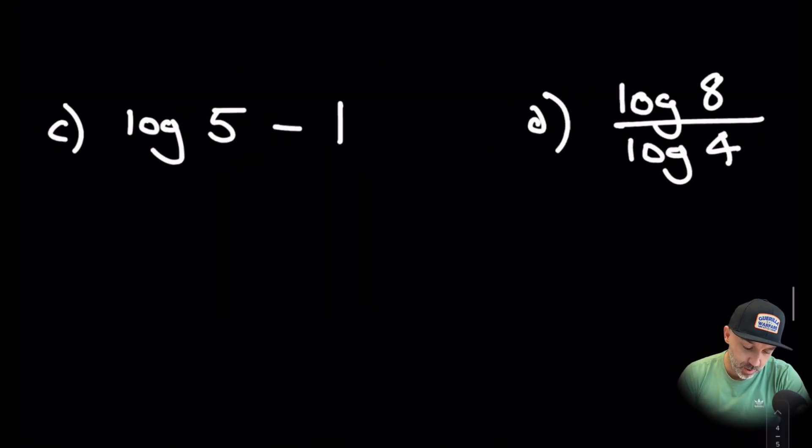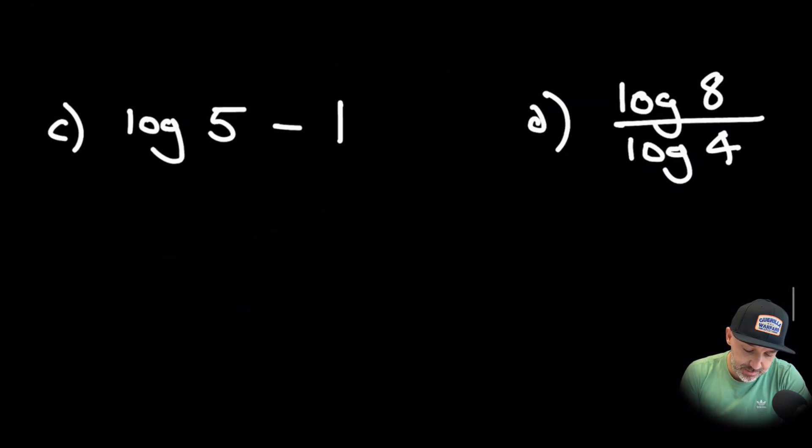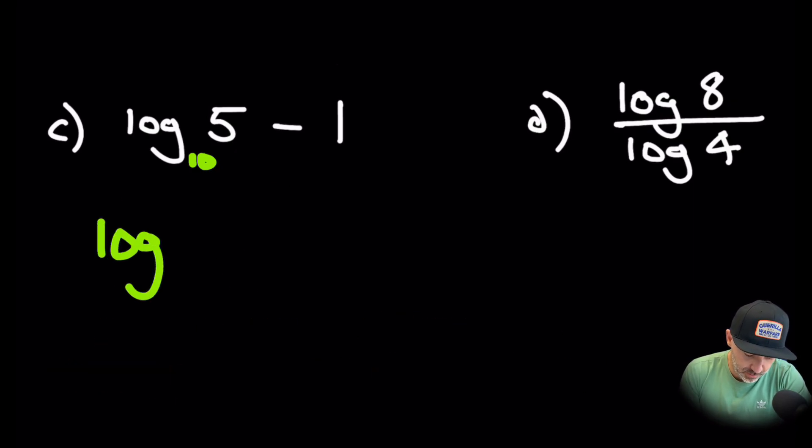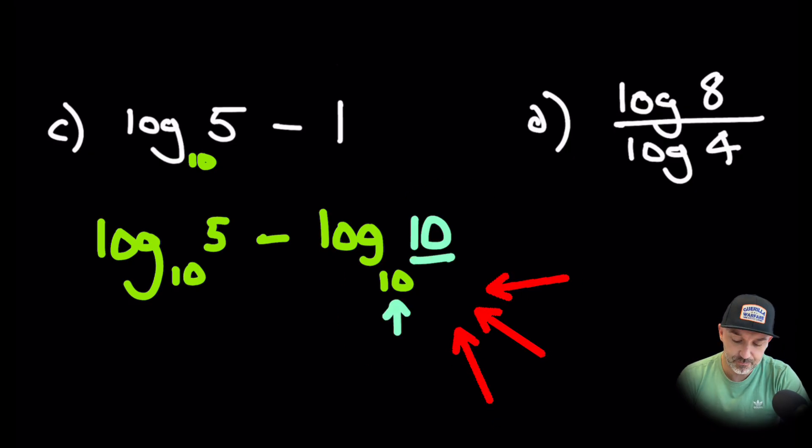Now we have one where we have a log but we also have just a single number. If we're working in base 10 as I said a default, then how do we write 1 as a base 10? Let's just write down log to base 10 of 5 subtract. Now the answer of this log is going to be 1. So if we're working in base 10, we would say well what do we need to raise the power of 10 by to give us 10? And the answer to that is 1.